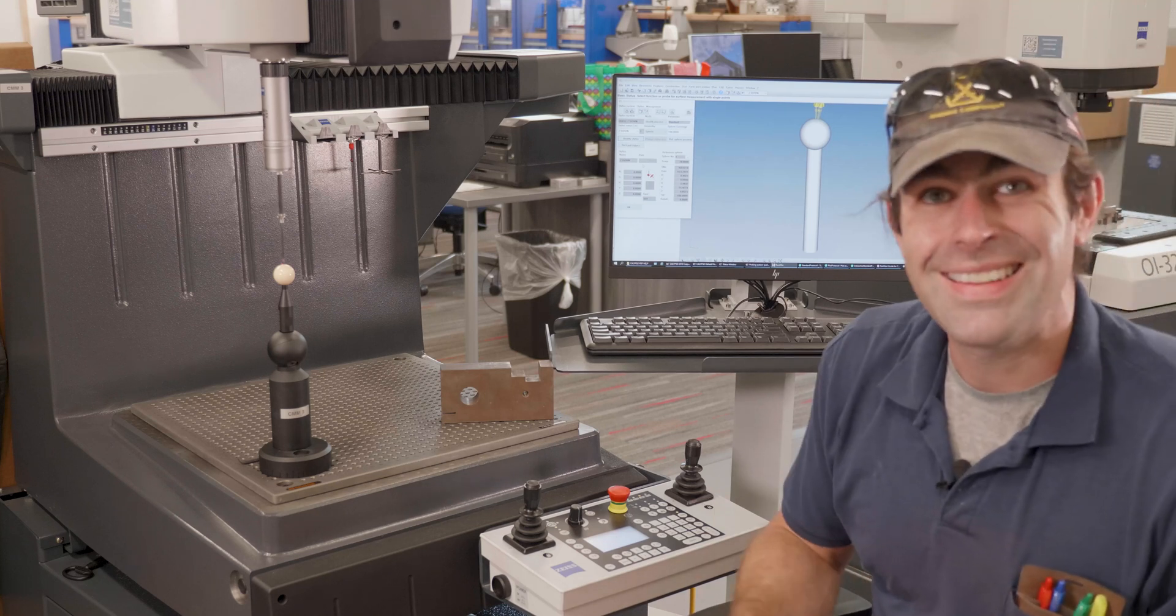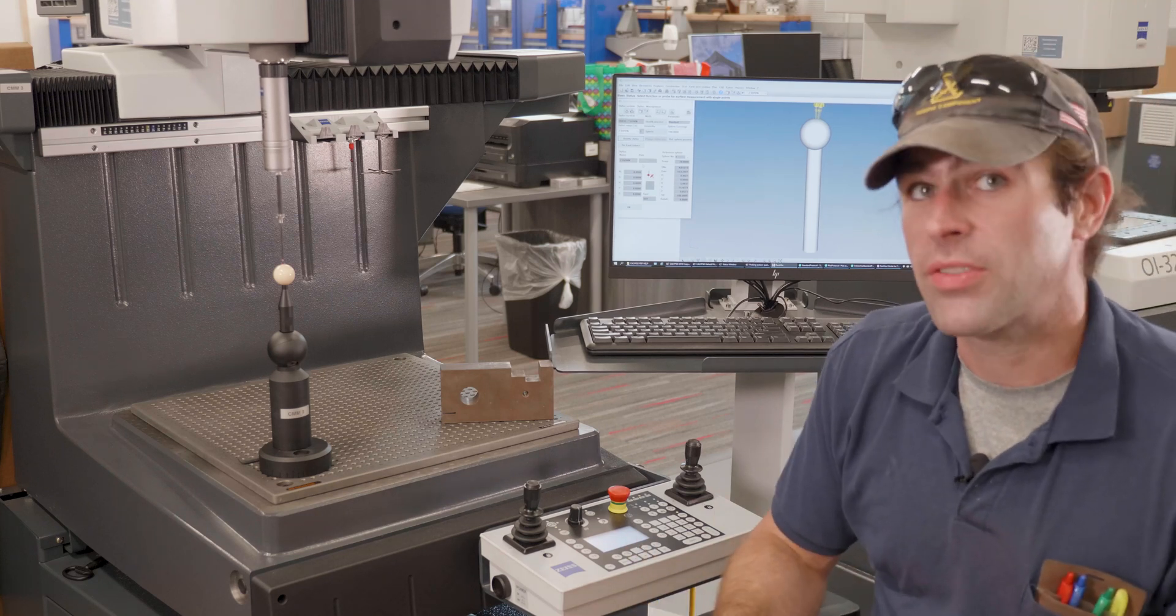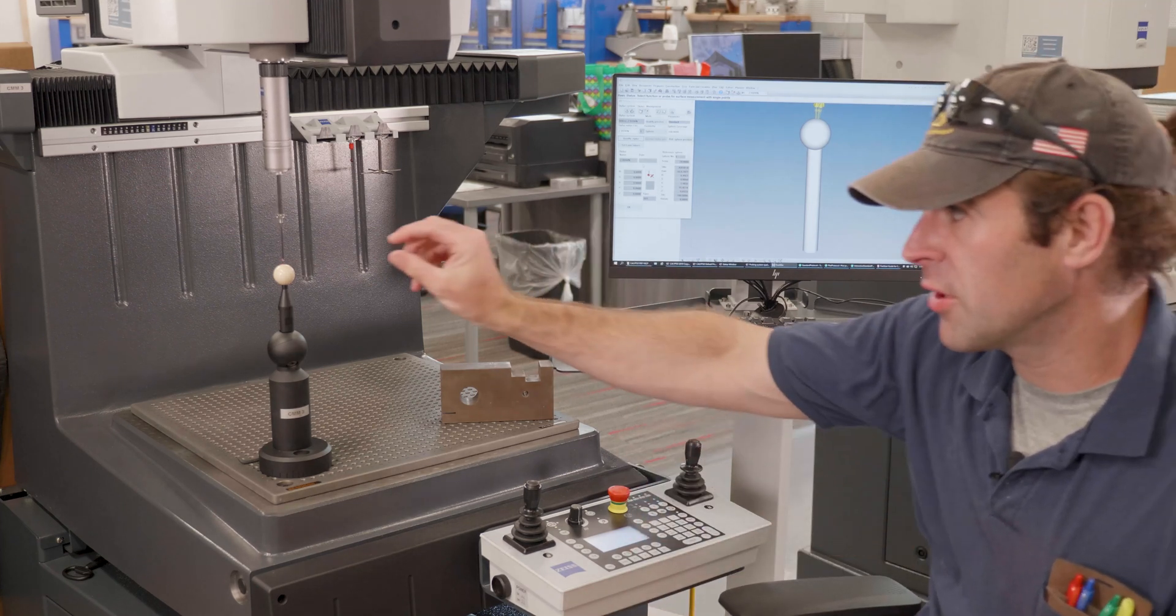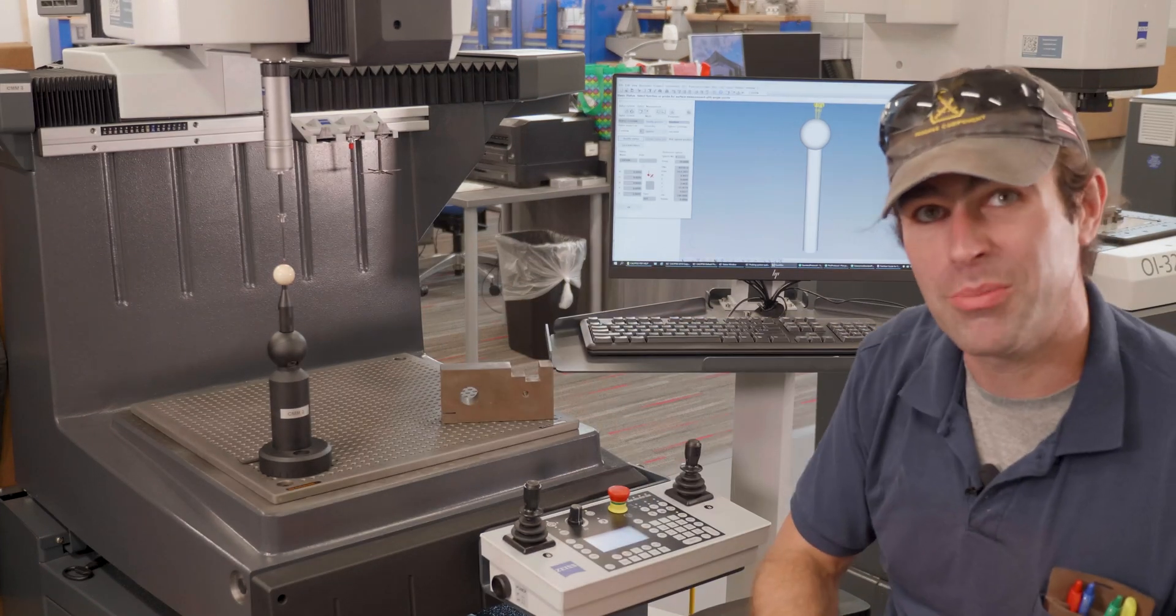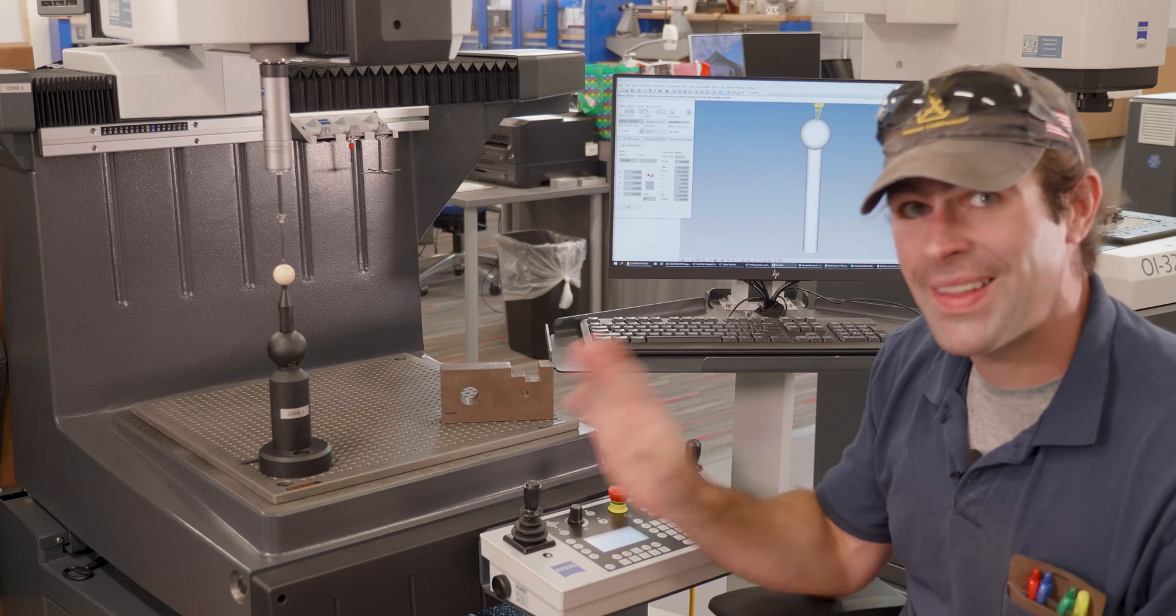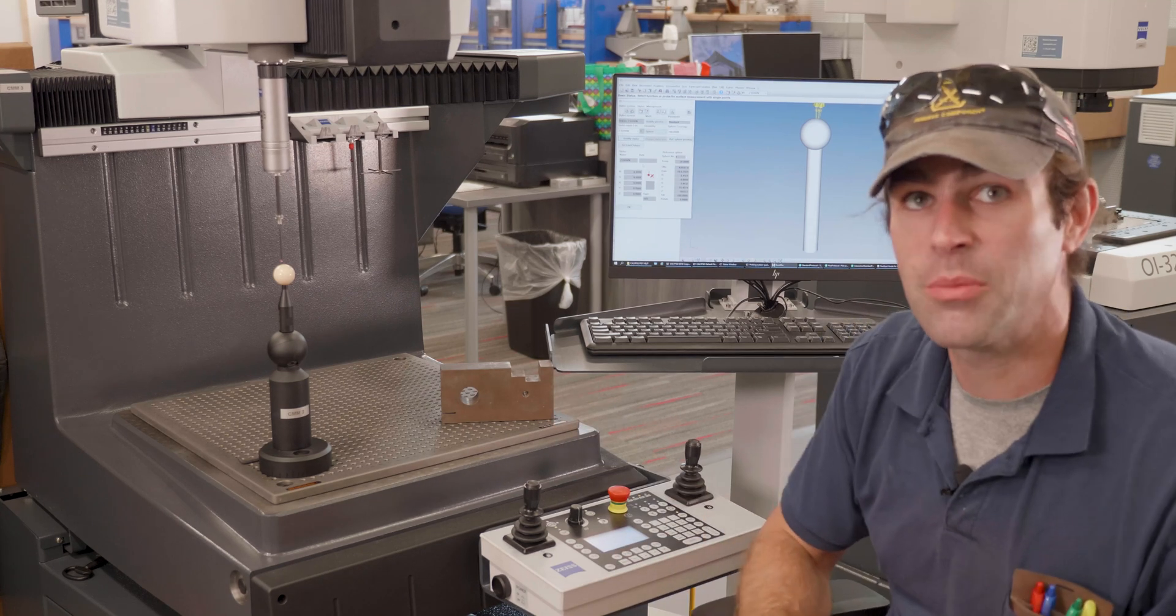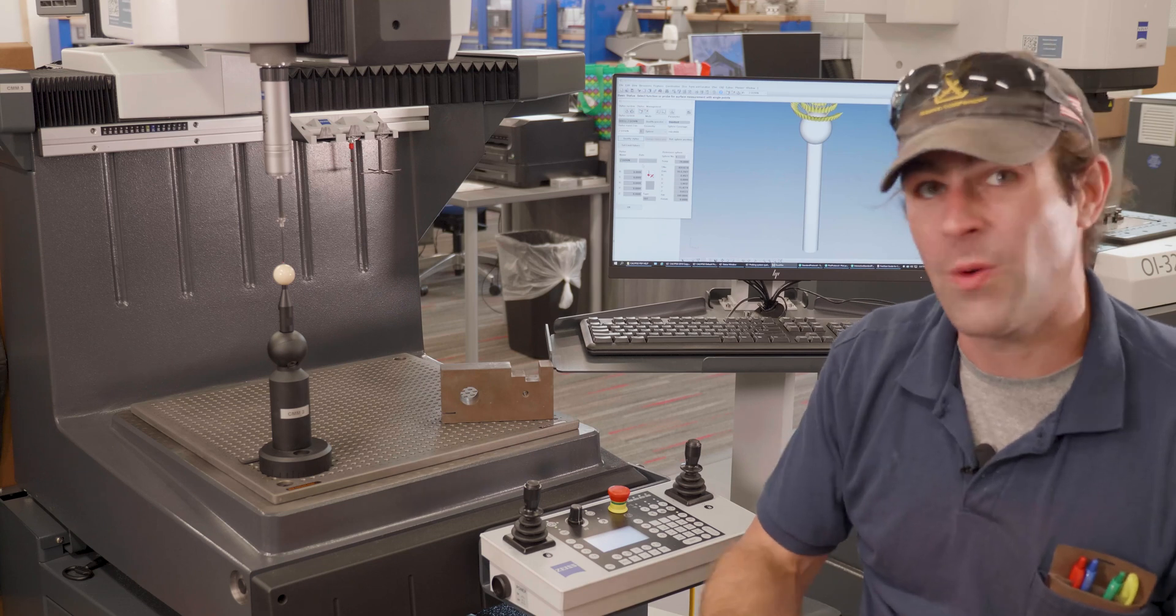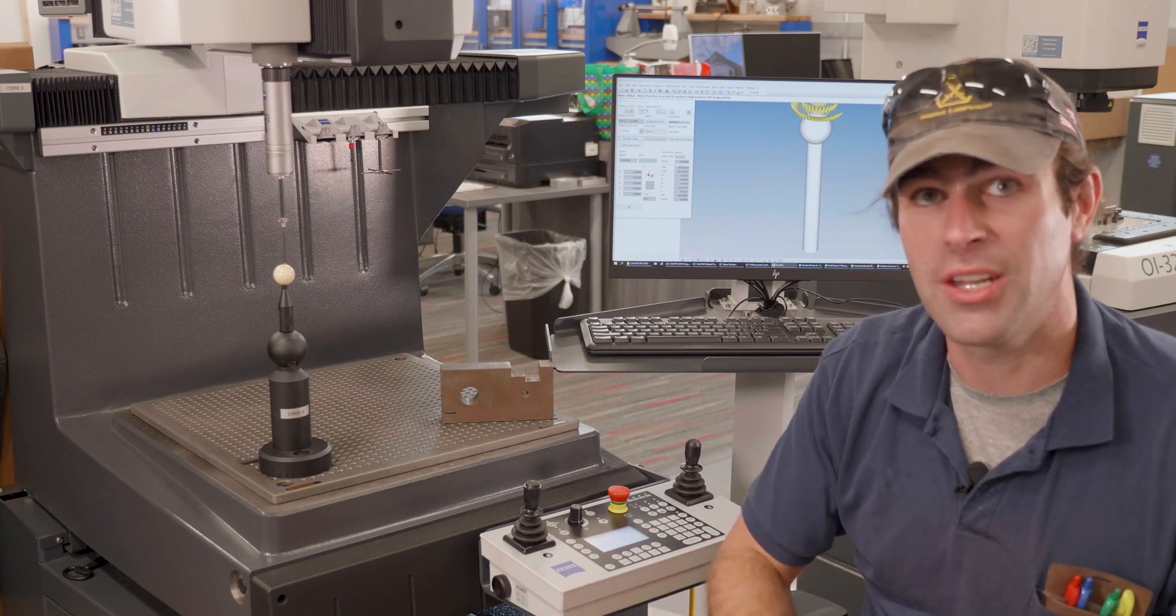Now the machine is on autopilot. It's going to scan that reference sphere, and when it's done it'll finish. It'll leave the probe about a half inch above that reference sphere, and that stylus system will be qualified. You could write a program for a part right then and there and check something if you needed to.